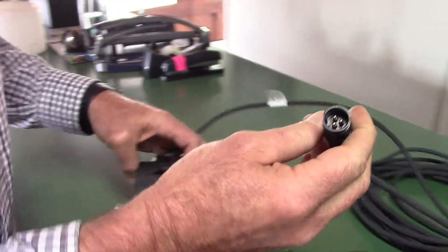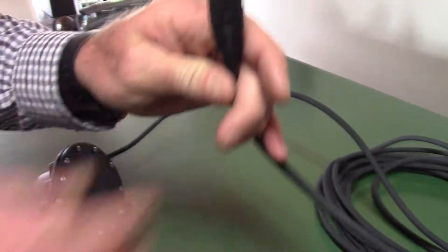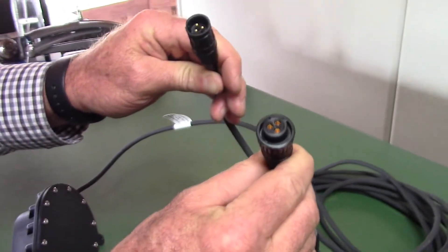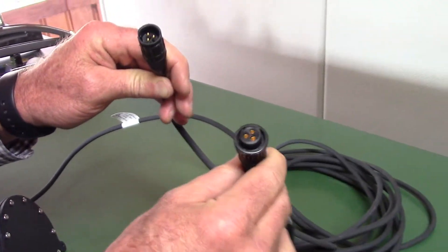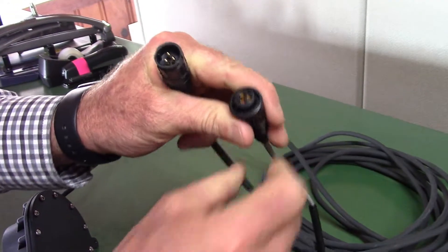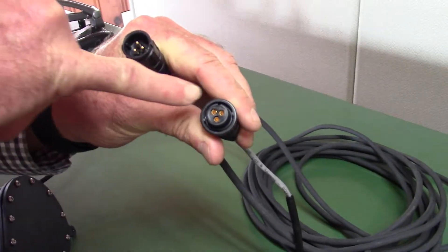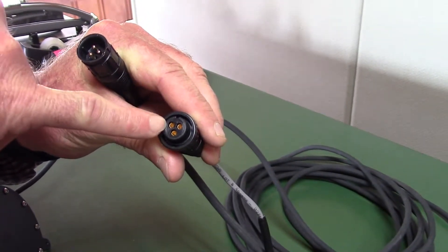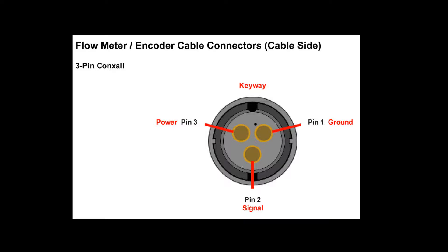At the end of this cable where the encoder hooks to the flow cable there are three pins. With the keyway at 12 o'clock, there's a pin at 2 o'clock, a pin at 6 o'clock, and a pin at 9 o'clock. If you look real close there's a little dot right there on it, and then you know you're at 2 o'clock, 6 o'clock, and 9 o'clock.